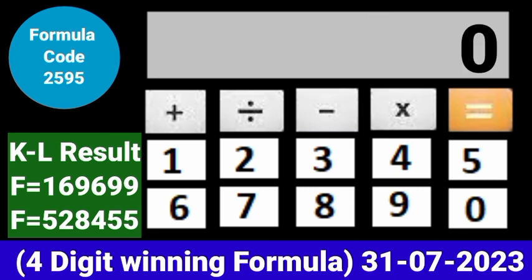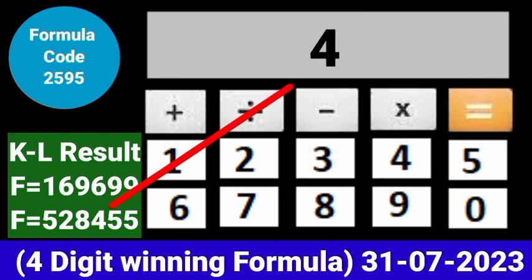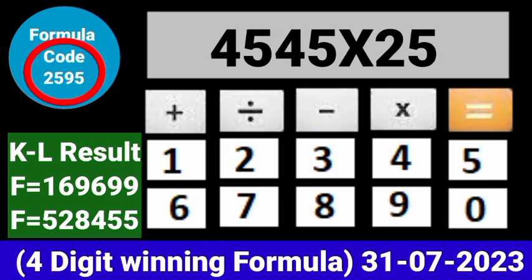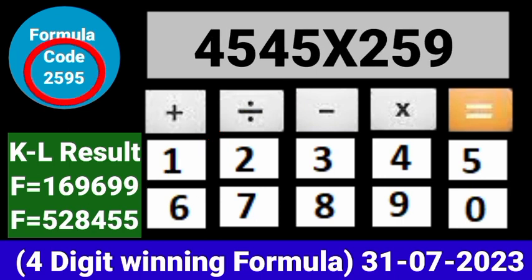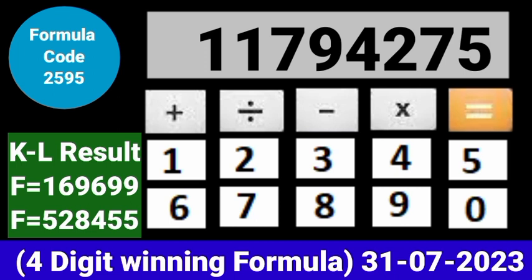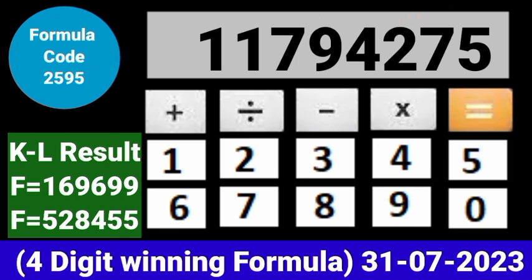Now zero the calculator. Put the next draw number on the calculator and multiply by this same formula code and press equal. After equal, you can check this single 4-digit number becoming into the same place for the next draw of Kerala Lottery 3PM.